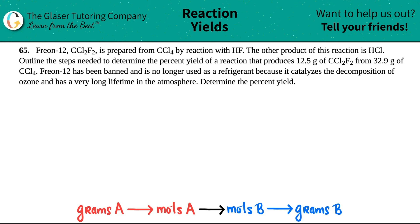Number 65: Freon-12, which is CCl2F2, is prepared from CCl4 by reaction with HF, and the other product of this reaction is HCl. Outline the steps needed to determine the percent yield of a reaction that produces 12.5 grams of CCl2F2 from 32.9 grams of CCl4. Fun fact: Freon-12 has been banned and is no longer used as a refrigerant because it catalyzes the decomposition of ozone and has a very long lifetime in the atmosphere. Determine the percent yield.